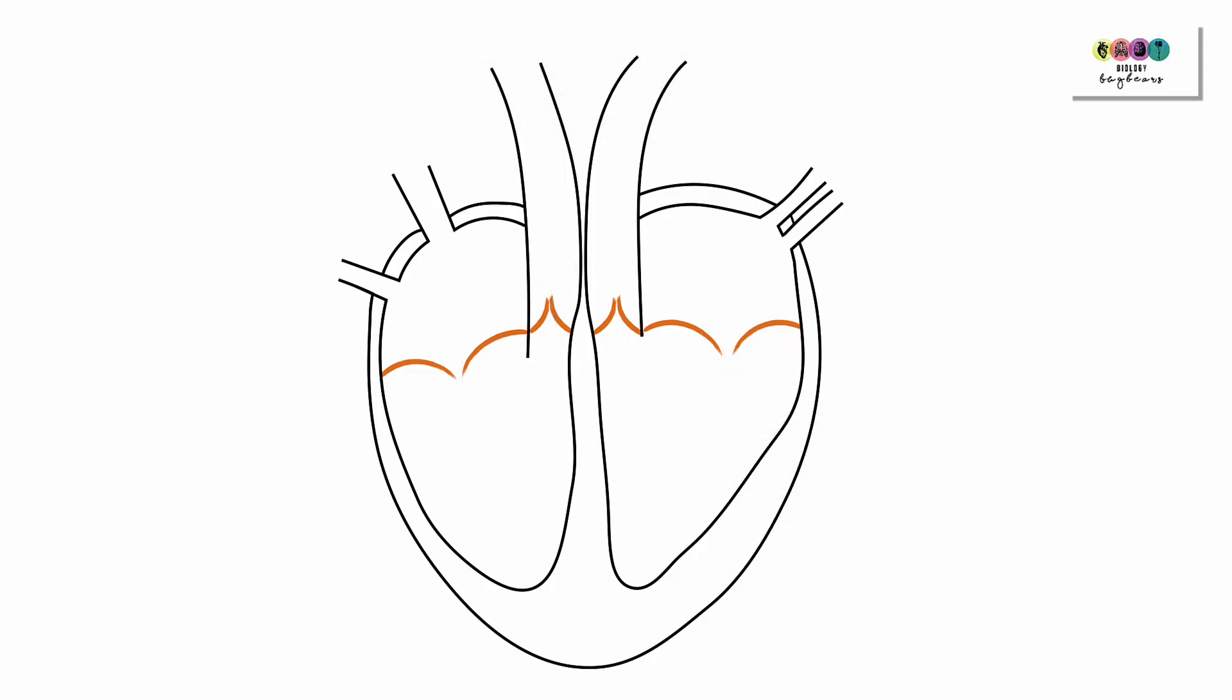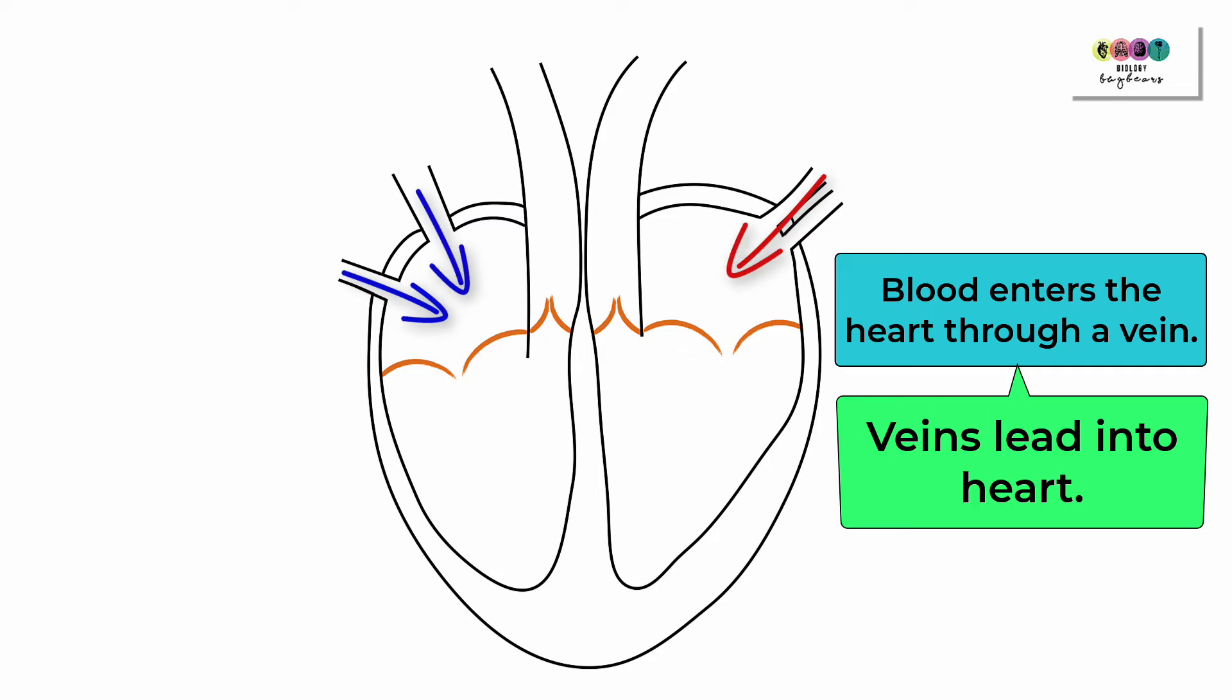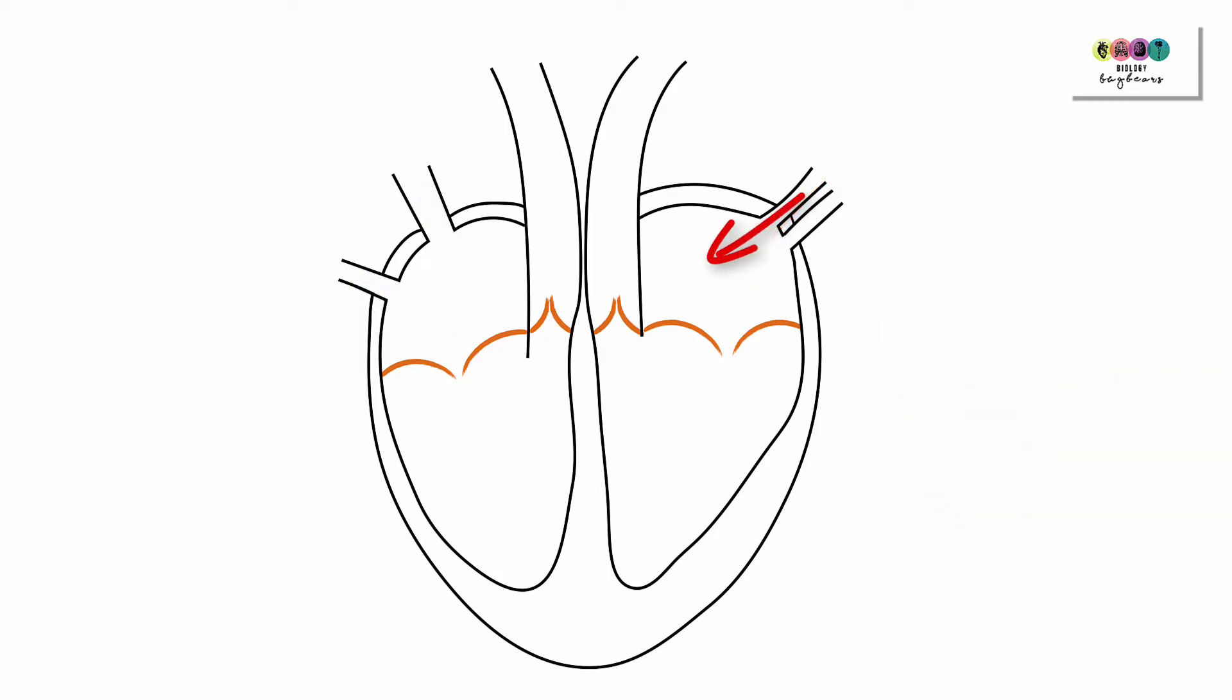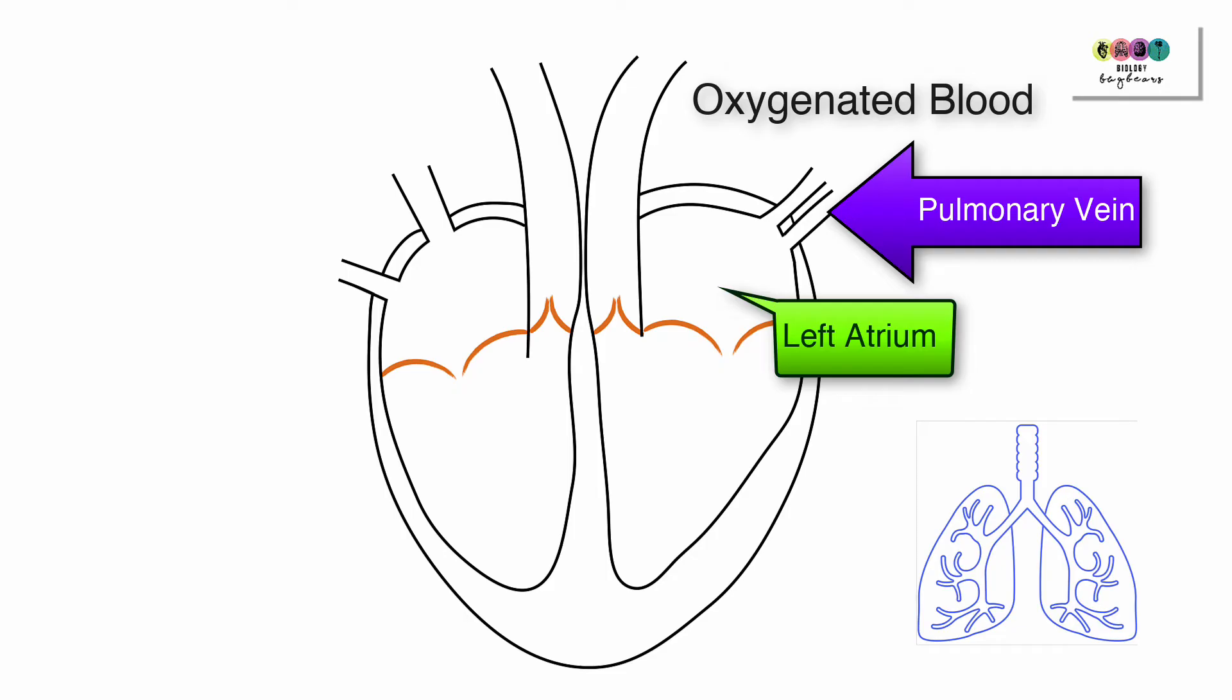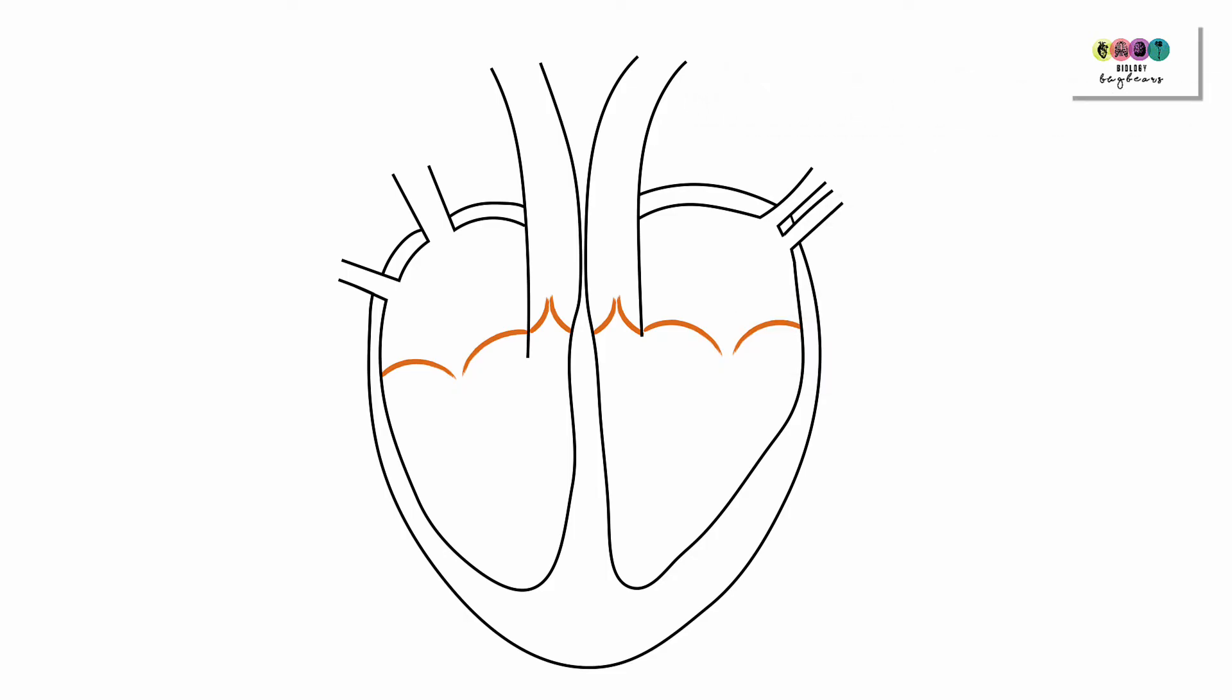When we're looking at the blood flowing or entering into the heart, it enters through a vein. Veins lead into the heart. Let's look at the left hand side. Blood enters the heart through a pulmonary vein and it enters into the left atrium. This is oxygenated blood—it's just returned from the lungs.